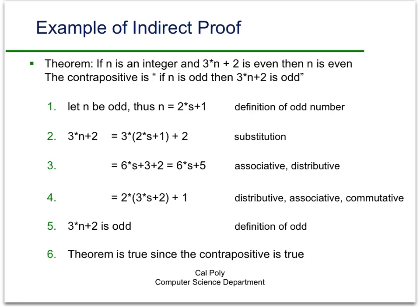So let n be odd, then n is equal to 2 times s plus 1, definition of an odd number. Then plug that in to what we're trying to figure out. Mainly we want to see whether 3 times n plus 2 is odd or even. So we write that out. We plug in this formula for n because n is odd, and we get 3 times 2s plus 1 plus 2.